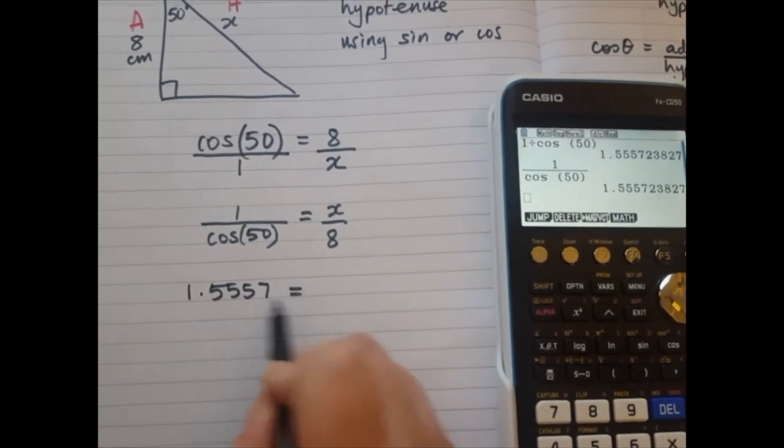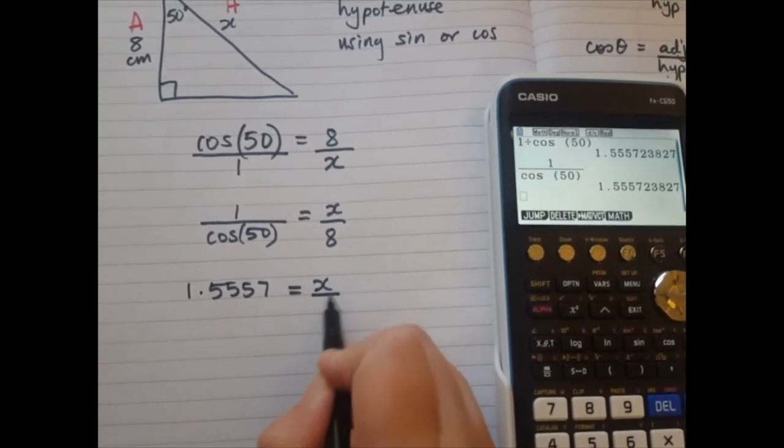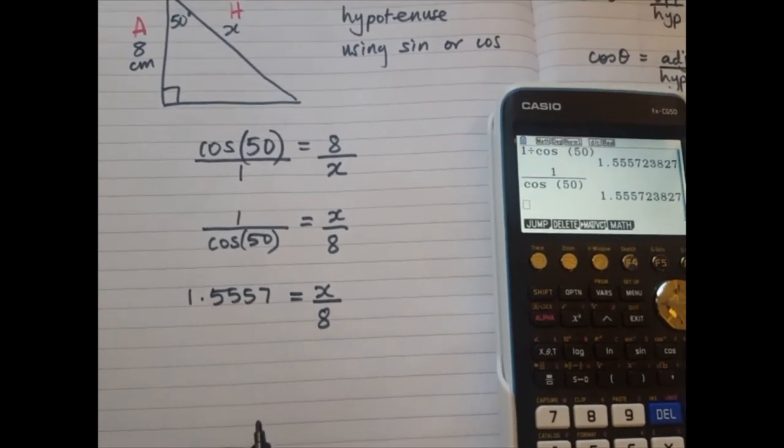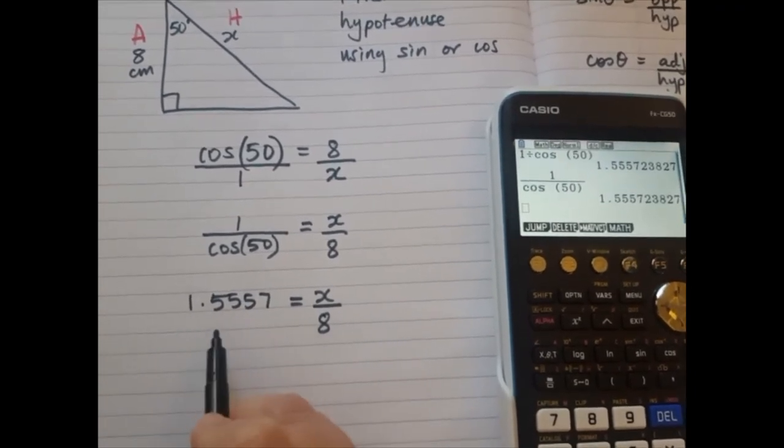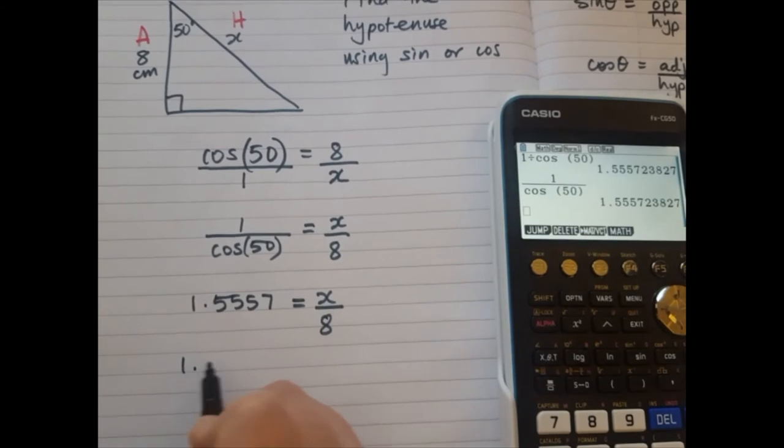And we can see this decimal number equals x divided by 8. So to work out what x is, I need to take this number here and multiply by 8.